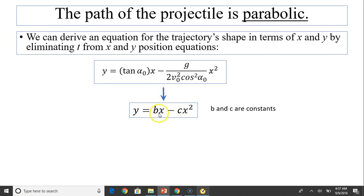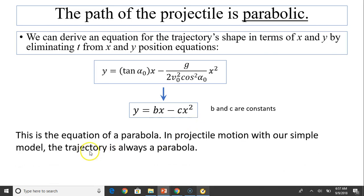We can change this equation to bx minus cx squared, where both b and c are constant. This is the equation for a parabola. In projectile motion with our simple model, the simple model is to ignore air resistance and treat a projectile as a little particle. The trajectory of a projectile is always parabolic.